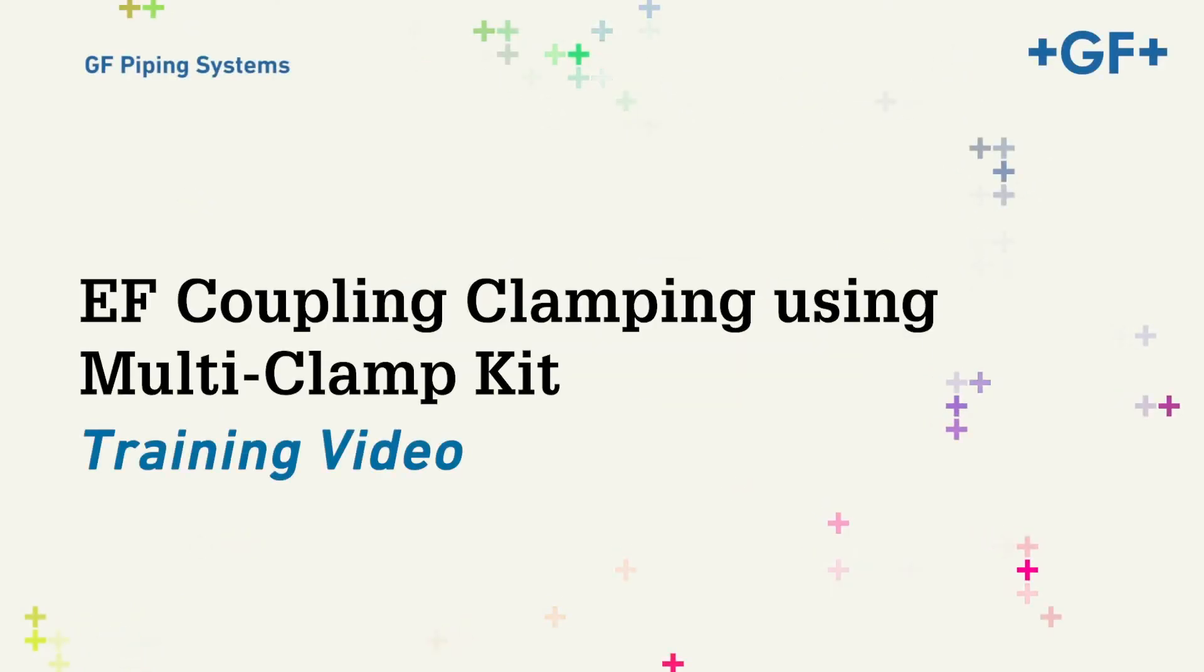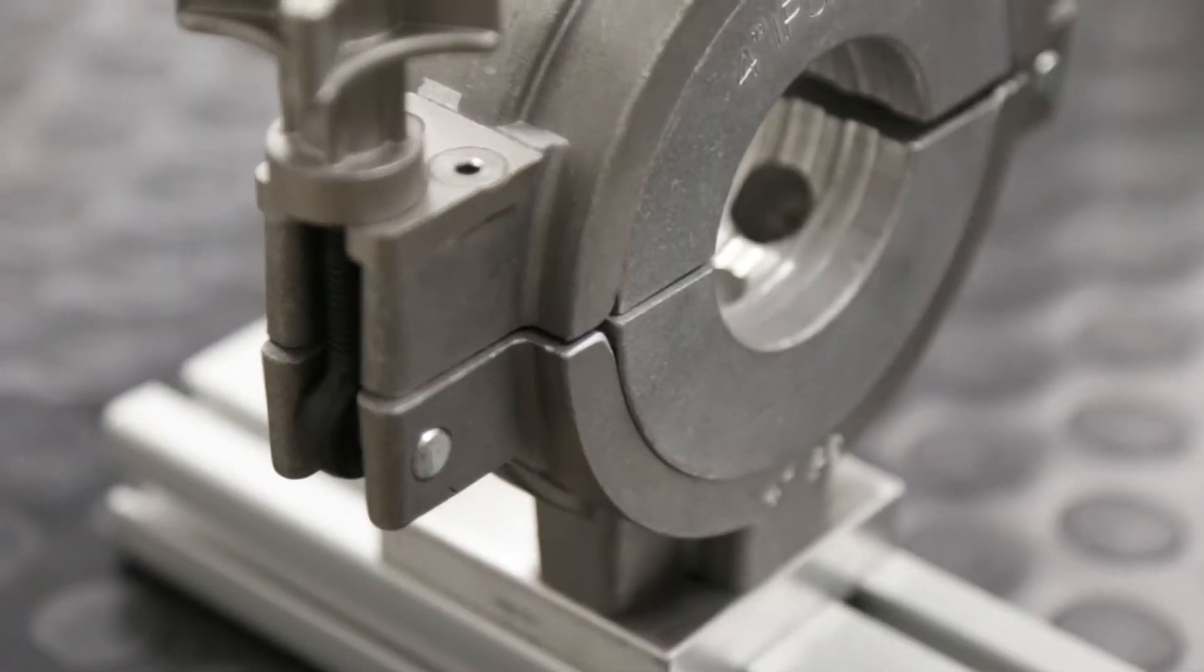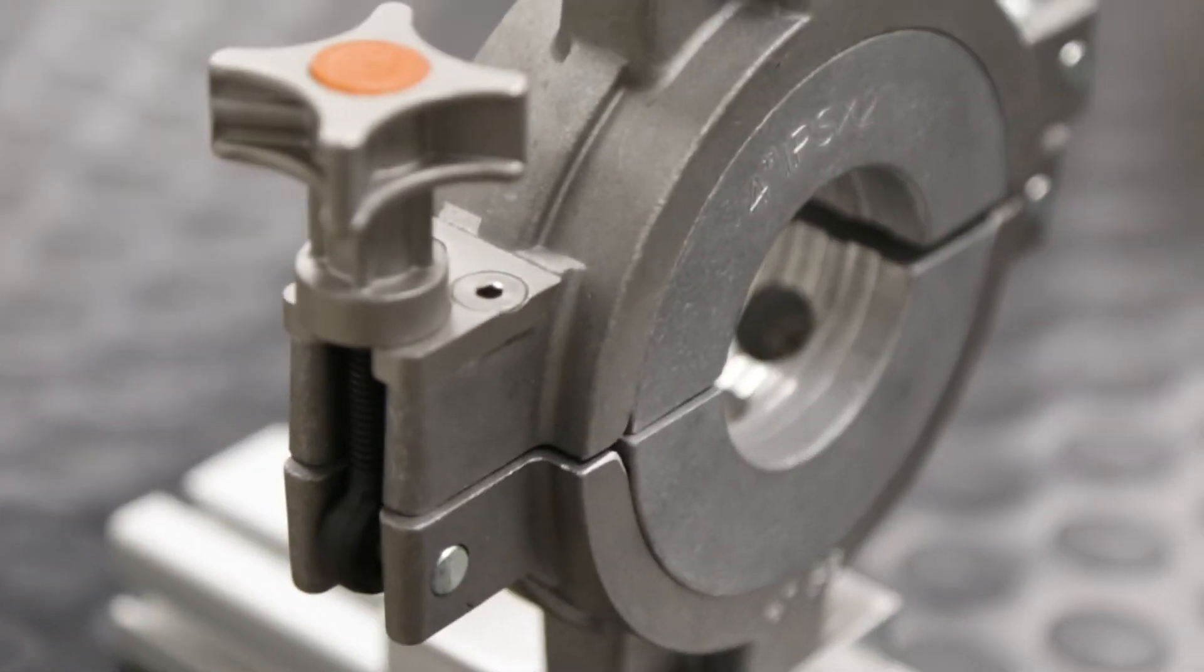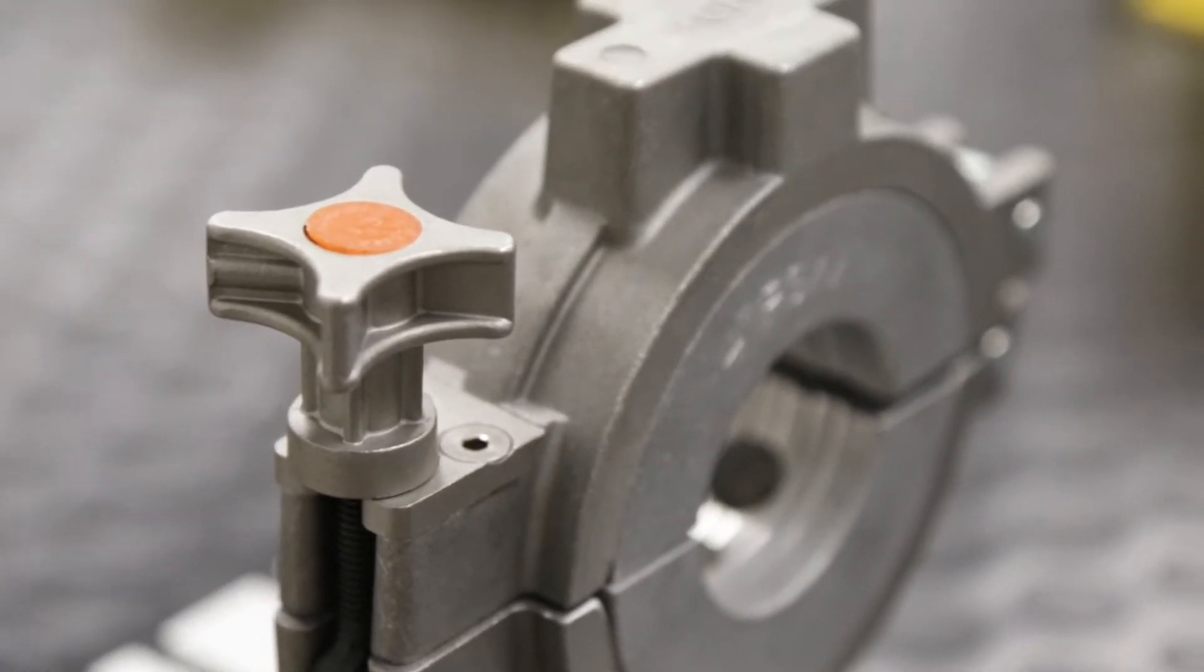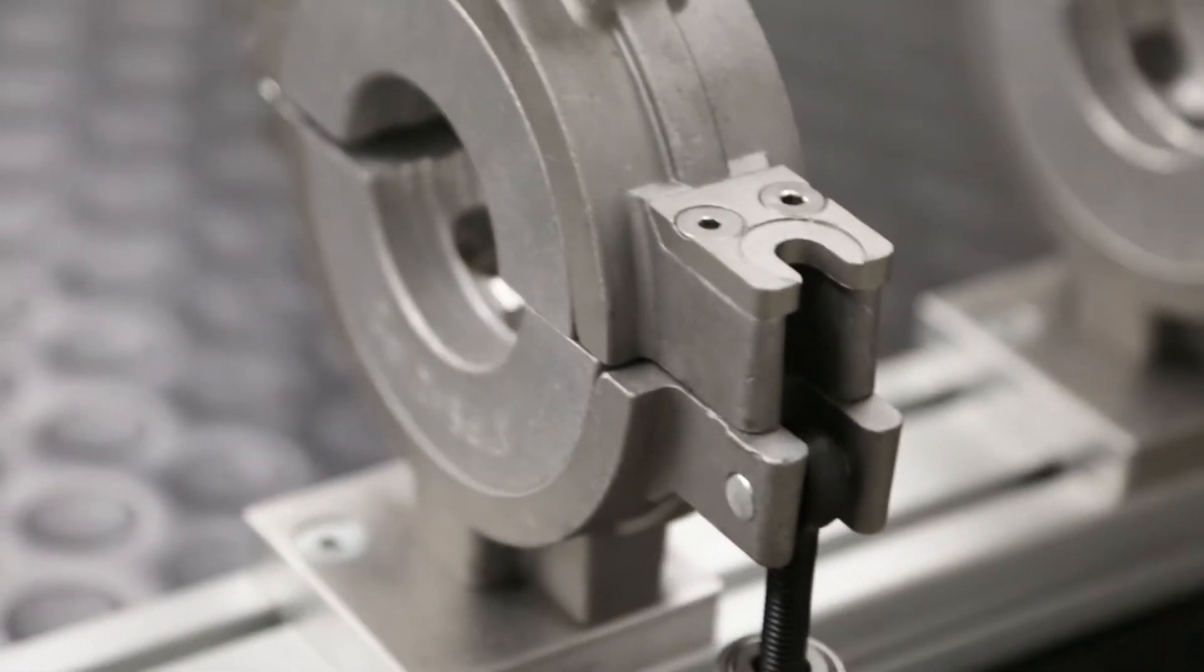This video will demonstrate the recommended procedure for use of GF Central Plastics multi-clamp kit on EF couplings. The versatile multi-clamp kit is ideal for multiple EF coupling clamping duties. Basic unit provides an 18-inch bar,